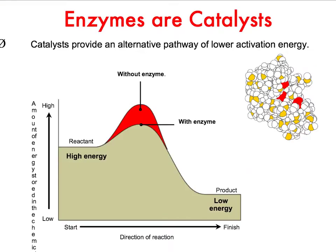When we talk about enzymes as catalysts, we have to remember that chemical reactions start with reactants and end with products. If you were to graph a reaction being pushed down a hill, you have to put some energy in to make it happen before it goes. In this example we've got a decomposition exothermic reaction, because the energy of the reactants is much higher than that of the products.